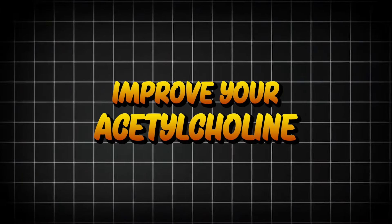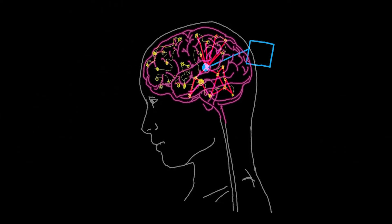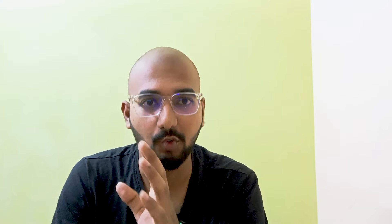Number 1: Improve your acetylcholine. What is acetylcholine? This is a chemical in your brain — it is a neurotransmitter, a biological chemical that supports attention, learning, and creativity. It plays a major role. So try to improve it.